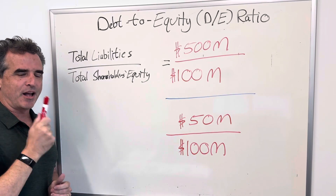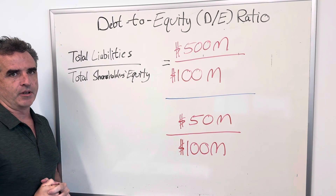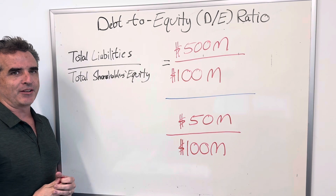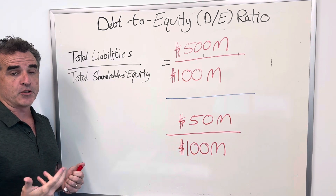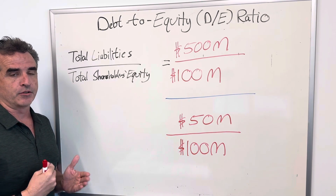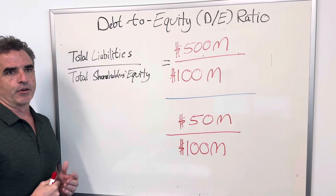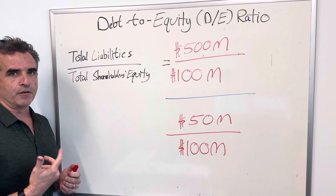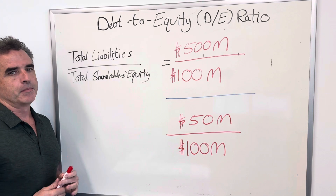Hey everybody, it's your old pal Brian Hunt. Welcome to another episode of 60 Seconds of Risk. I thought I'd take this time to go back and look at another financial ratio metric that you could use to understand if a client or a company is in good financial straits, if it's a good investment, or if you need to run away from it.